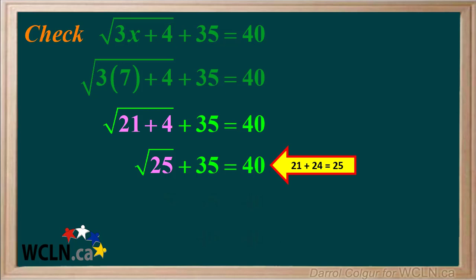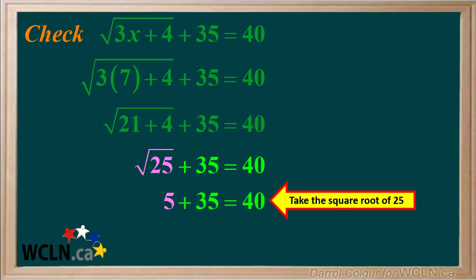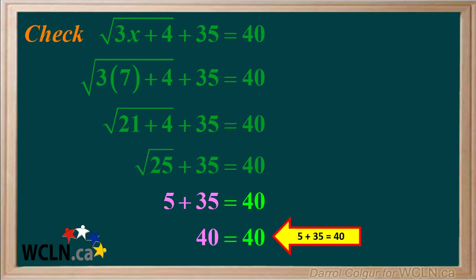Now that we have this, the next thing we can do is take the square root of 25. The square root of 25 is 5. So next we just add 5 plus 35 on the left side. 5 plus 35 equals 40.